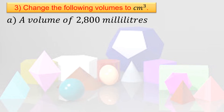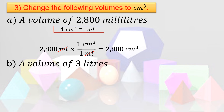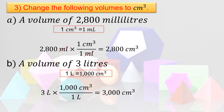To convert 2,800 milliliters to cubic centimeters: note that 1 cubic centimeter equals 1 milliliter, so whatever value you have in mL is also the value in cubic centimeters. Therefore 2,800 mL equals 2,800 cubic centimeters. For 3 liters: 1 liter equals 1,000 cubic centimeters, so 3 liters times 1,000 cubic centimeters over 1 liter equals 3,000 cubic centimeters, or 3,000 mL.